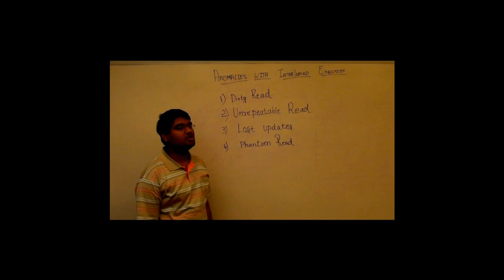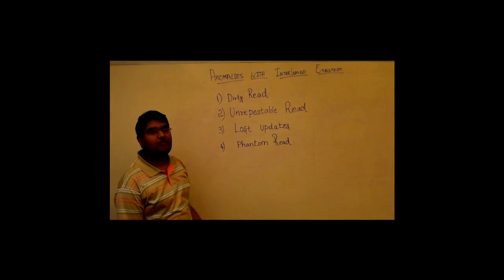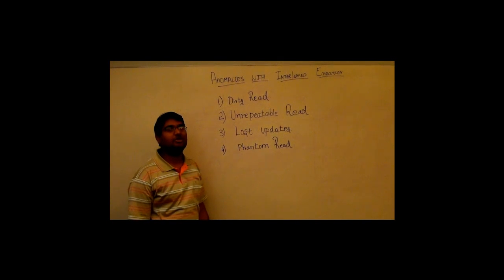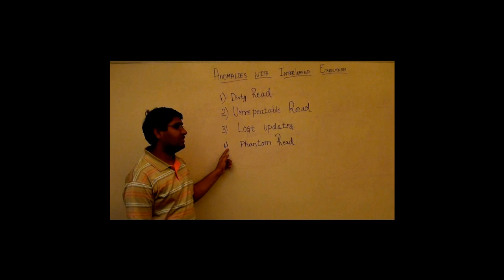Hi, my name is Lakshmi Varpassad Arsumilli and I am going to talk about anomalies with interleaved execution. There are four types of anomalies with interleaved execution. They are dirty read, unrepeatable read, lost updates and phantom read.